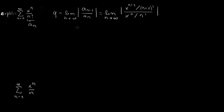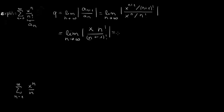Now let's simplify. We have x^n below and x^(n+1) above, so we are left with only x. Taking the limit as n goes to infinity, we get the absolute value of x times n factorial over (n+1) factorial. Note: (n+1)! equals n! times (n+1), so the n! cancels, leaving us with the limit of |x| over (n+1).